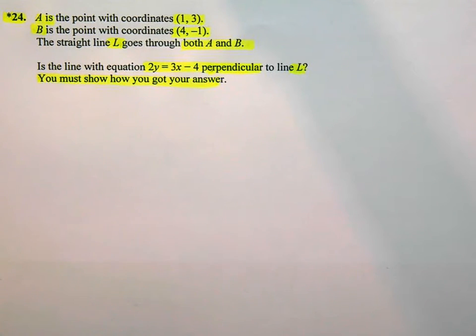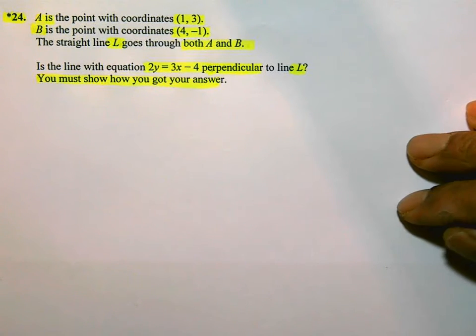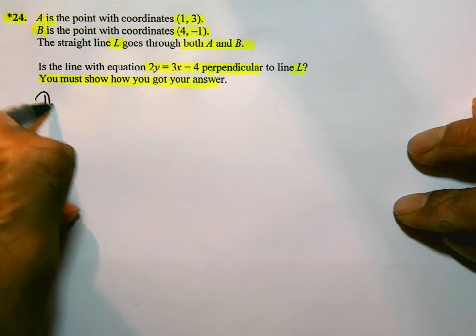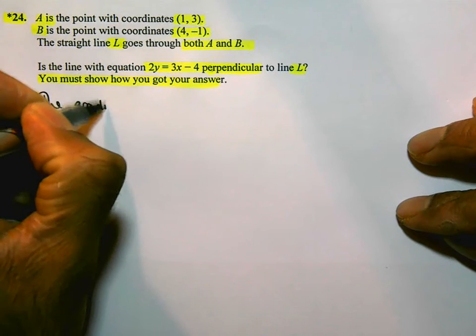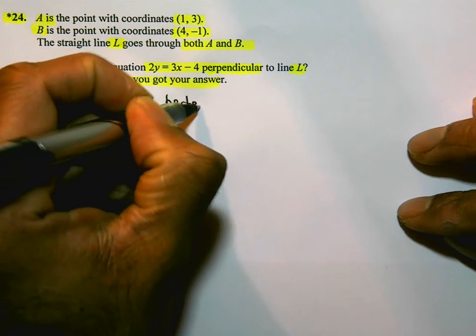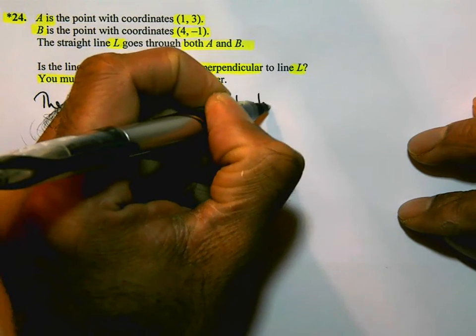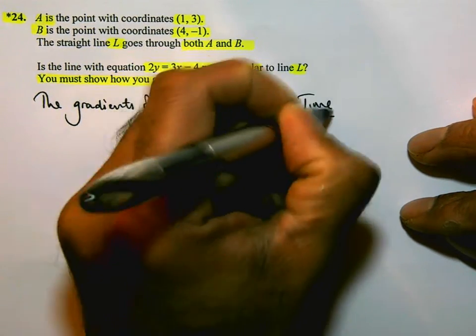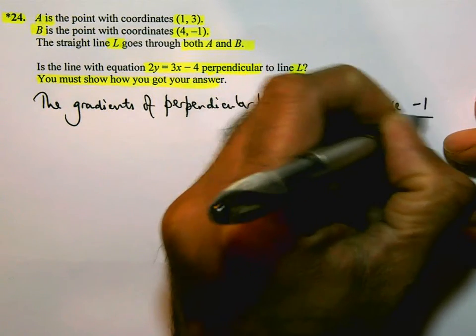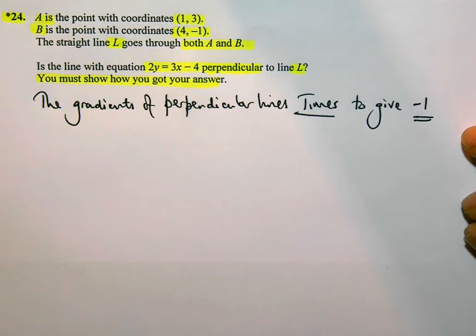So you have to show how you got your answer. You have to show the method that you've actually used to show whether they're perpendicular or not. So there's a fact that you need to know: the gradients of perpendicular lines times together to give -1. They times together to give you -1. So in other words, we need to work out the gradient of both the lines that they've actually mentioned.